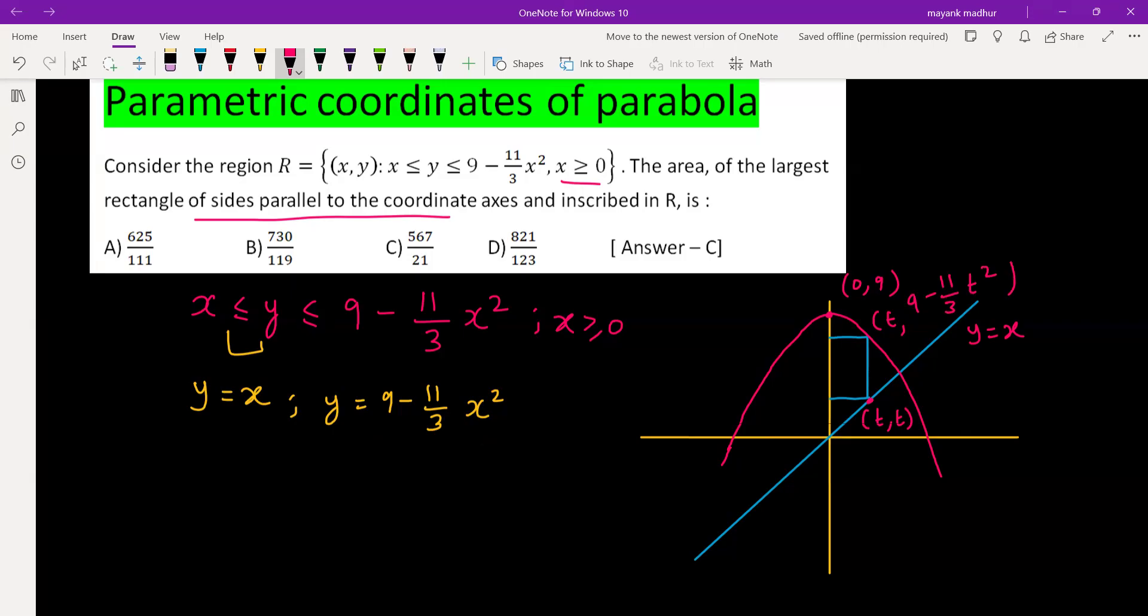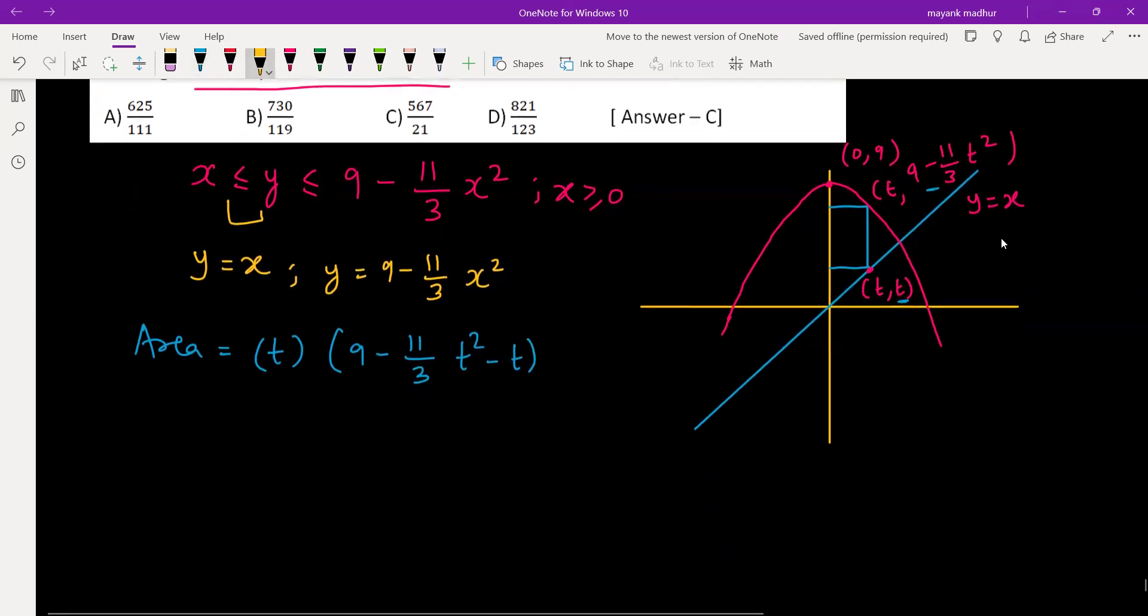Now we need to maximize the area of the rectangle, which is length into breadth. So this distance is t units, and what is this height? That will be the difference of these two y coordinates, which is 9 minus 11 by 3 t square minus t. So basically it is depending upon t, so we can call it as a function of t. And doing the multiplication, it is 9t minus 11 by 3 t cube minus t square.